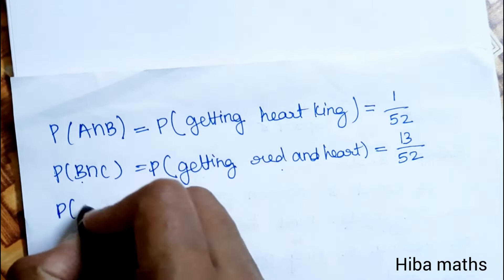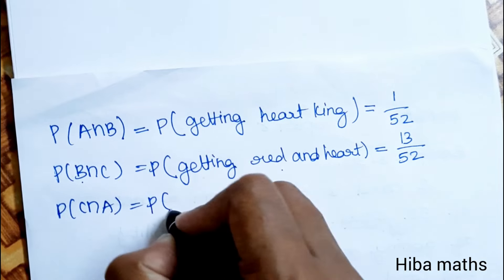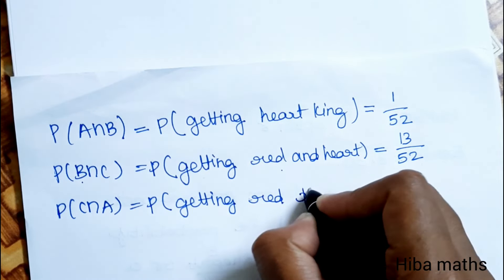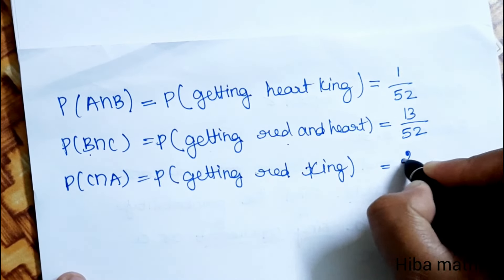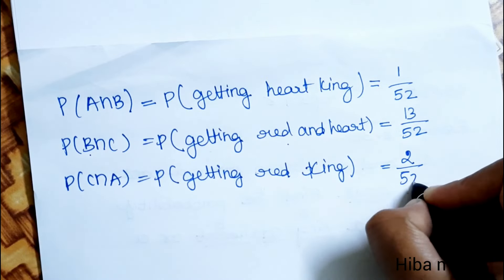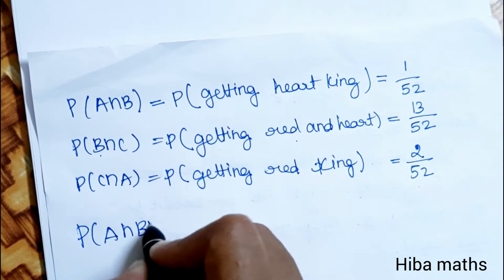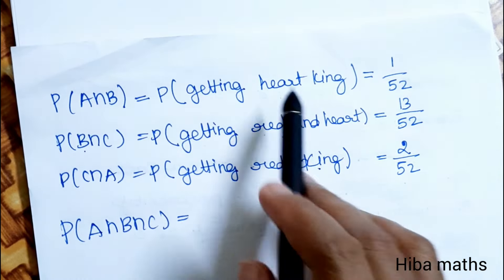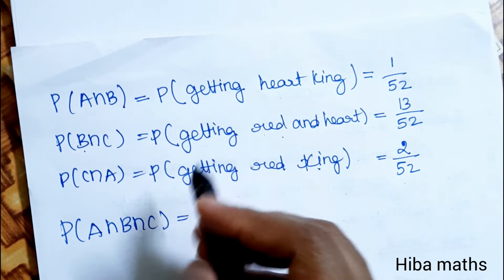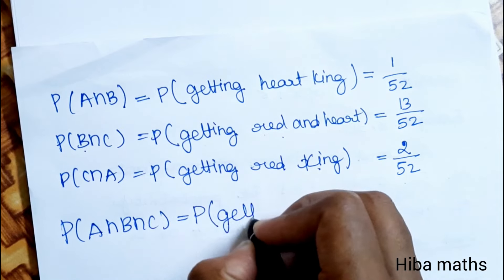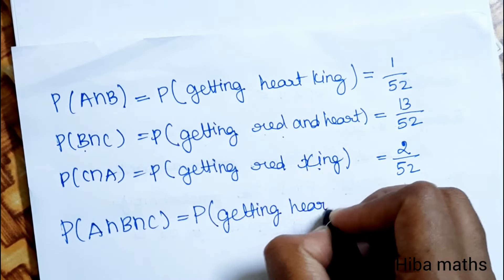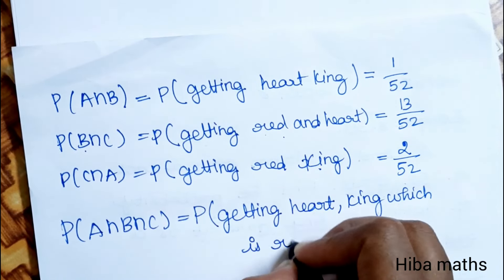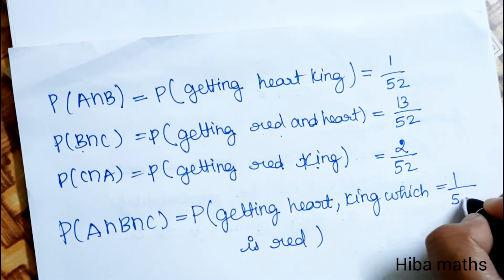P(C intersection A) means getting a red king. There are two red kings — the king of hearts and king of diamonds — so P(C intersection A) = 2 by 52. And P(A intersection B intersection C) = 1 by 52, since there is one red king of hearts.